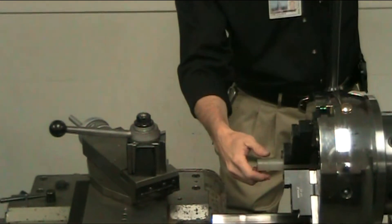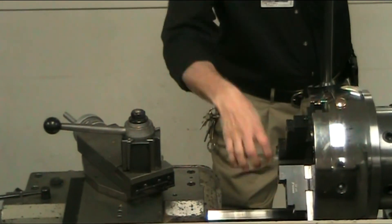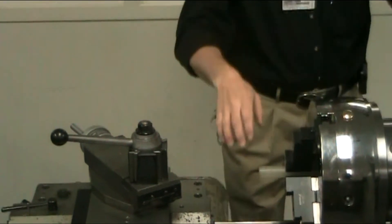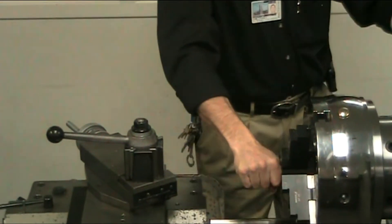You can sometimes come over and rotate your material if it's an odd shaped material. Tighten it up, shake your material, make sure it's tight in the chuck.